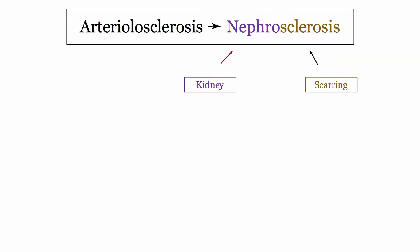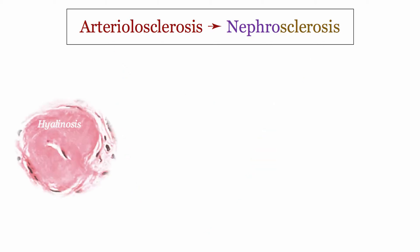Let's start with the title: nephrosclerosis. That's easy. Nephro is kidney and sclerosis is scarring, so we have scarring of the kidney. I'm willing to bet that these little sclerotic vessels have something to do with this kidney scarring.